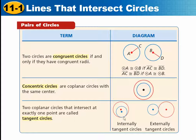And two coplanar circles that intersect at exactly one point are called tangent circles. So you can have them intersecting right here. This is their point of tangency. So the tangent line would be here. Or they could intersect at exactly one point where they share a point on each of the circles and the tangent line is in between them.